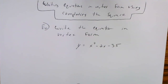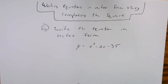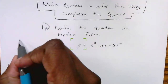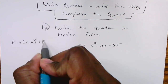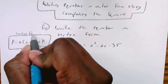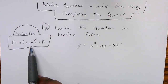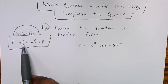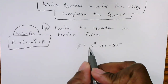This video is about writing the equation in vertex form using completing the square. You want to write the equation in vertex form — we're essentially looking for the form y equals a times (x minus h) squared plus k. That's the vertex form. In order to do that with completing the square, I want to rewrite it as some binomial squared with the a value in front of the parentheses plus some constant k.